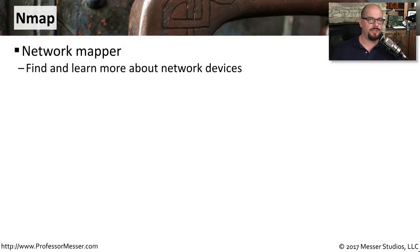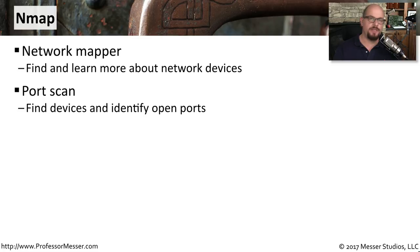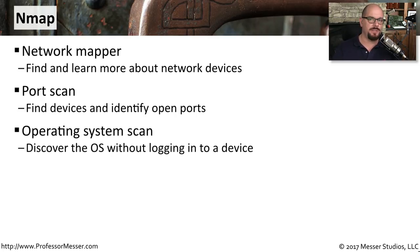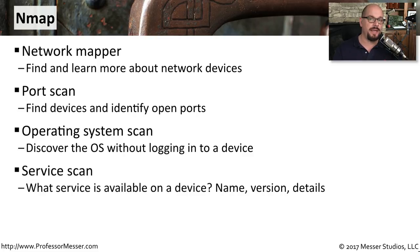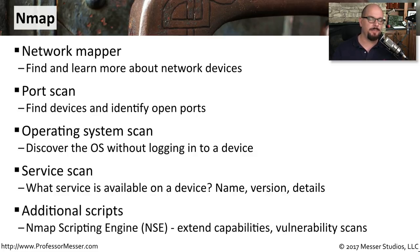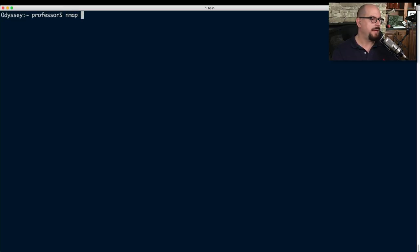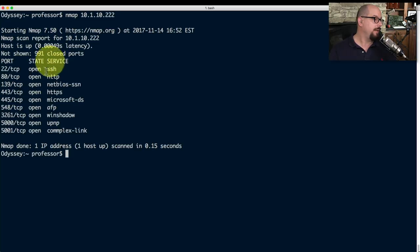One security utility you do not want to be without is NMAP — the network mapper — which gathers information from all different devices across the network. Using NMAP, you can perform a port scan to identify what services are available on a device, an operating system scan to determine what OS is running without authenticating, and a service scan that tells you the name, version, and other details about a service without actually using it. There are also scripts built into NMAP that extend capabilities to include vulnerability scans and much more.